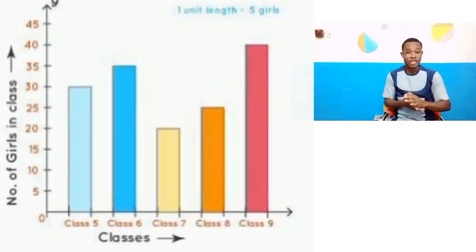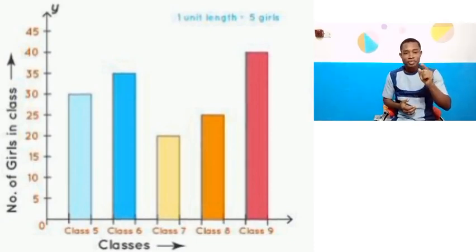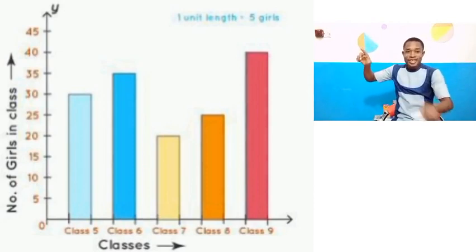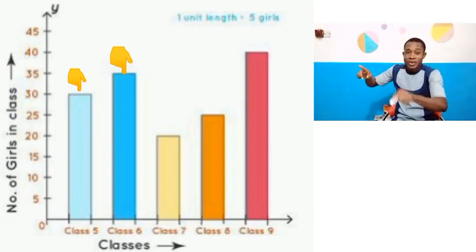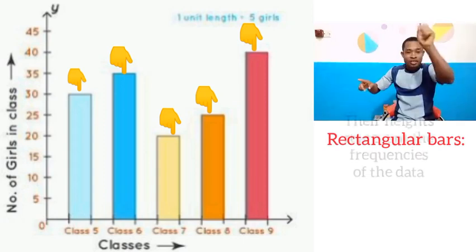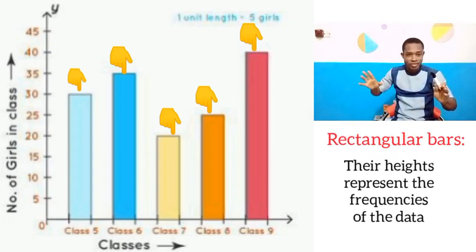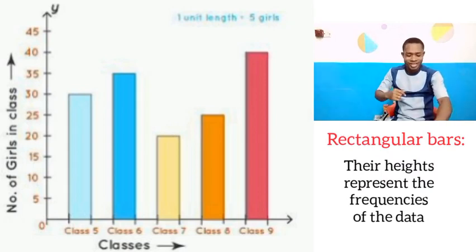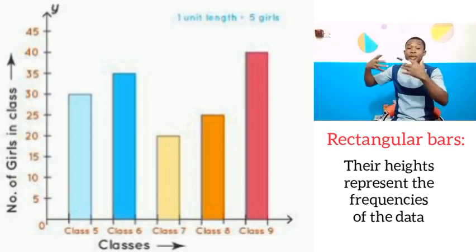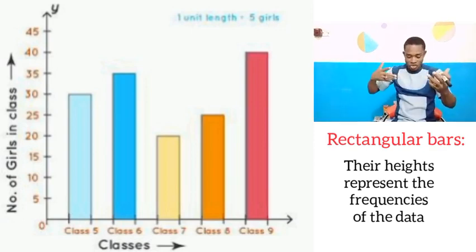Let us see how we interpret the bar chart — it is very simple. In the diagram you are seeing there, the bar chart has vertical bars — those rectangular bars that are standing — and they represent the value of the frequencies. So if you want to answer any question, just go there, and from the height of the rectangular bars you are seeing in that bar chart, the height represents the frequencies or the number of girls in the particular class.